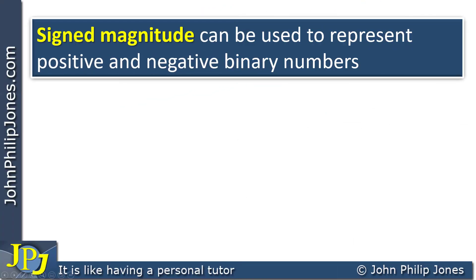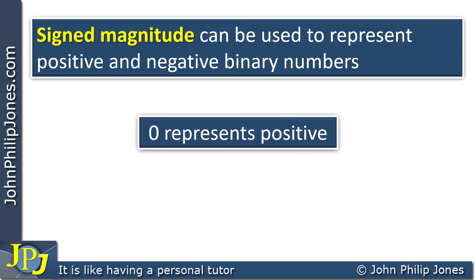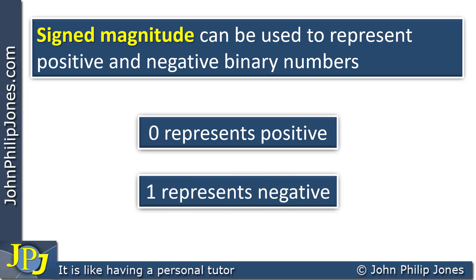Sign magnitude can be used to represent positive and negative binary numbers. This is where we have a 0 representing positive and a 1 representing negative. Let's have a look at some examples of this.